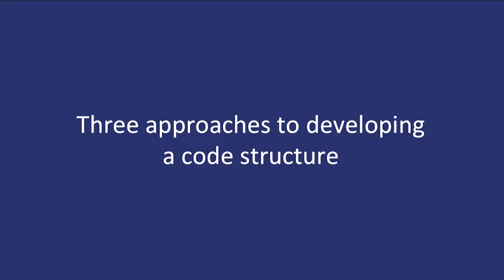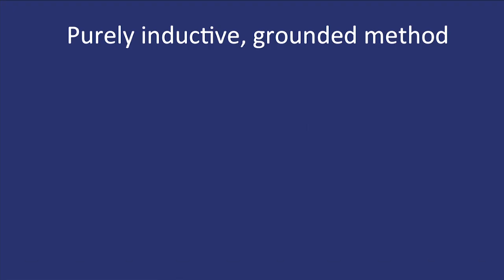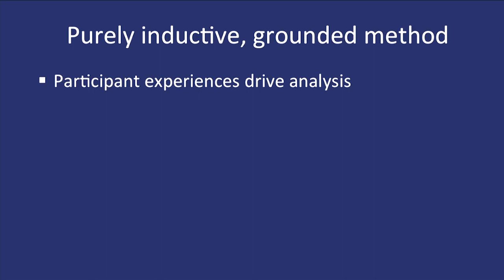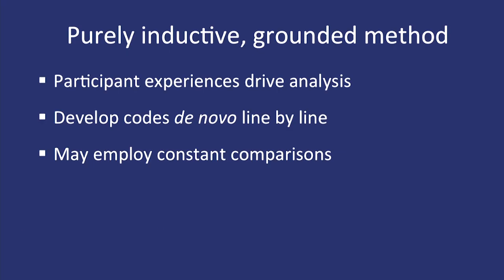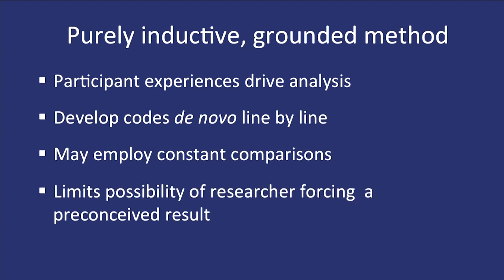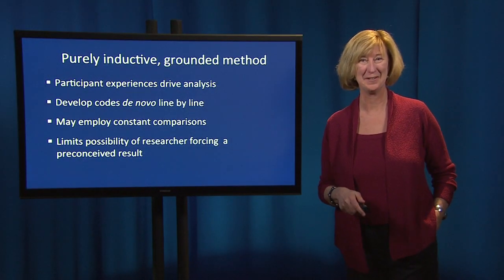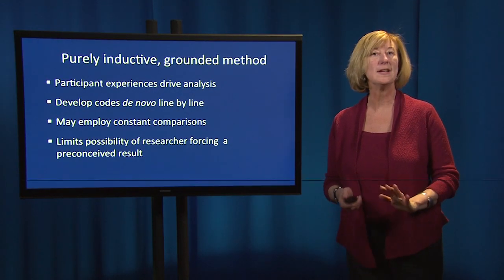There are three approaches to developing a code structure. The first is a purely inductive, grounded method — working wholly from participant experiences that drive the analysis entirely. We do line-by-line de novo coding, meaning every line of the transcript is coded for an emerging idea and nothing is brought in advance. This may employ constant comparisons — moving back and forth from codes to emerging data to look for similarities or differences. The benefit of a purely inductive method is that it limits the possibility of the researcher forcing a preconceived result.